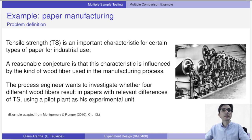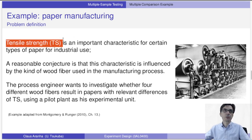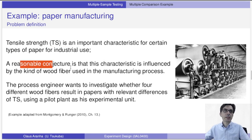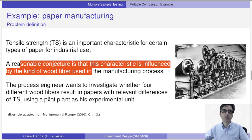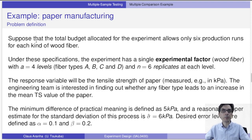The example here is a paper manufacturing factory. We want to construct paper and choose the best material. The material is measured on tensile strength — a good material gives high tensile strength, a bad material gives low tensile strength. It's reasonable to expect that tensile strength changes according to the material, and we choose four different types of materials to test. We have a total budget allowing only six observations for each type of material.